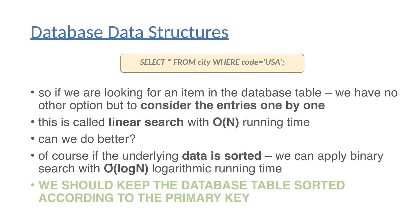So what is the solution? We should keep the database table sorted according to the primary key, and this is how we achieve logarithmic running time complexity. This is why we have to talk about B-trees and B+ trees — these tree-like data structures store the primary keys, basically the indices, in sorted order in a tree-like structure. This is what we are going to talk about in the next lecture. Thanks for watching.